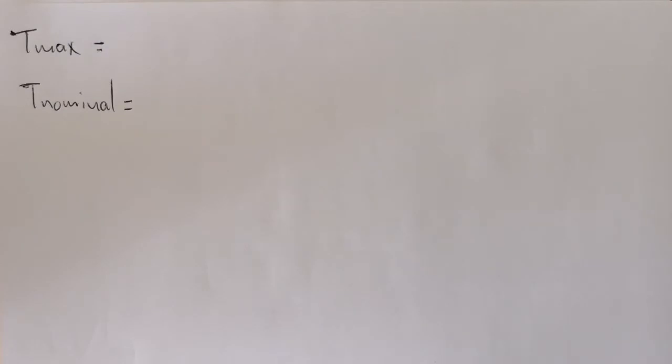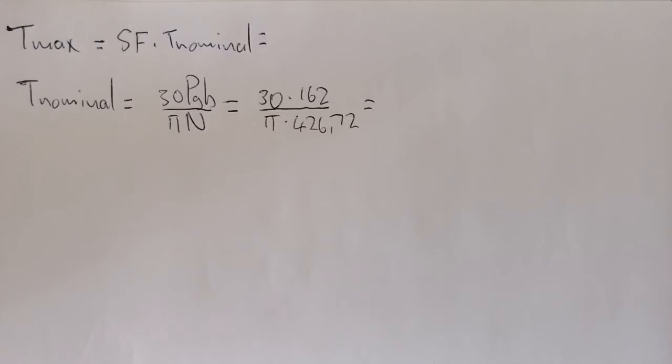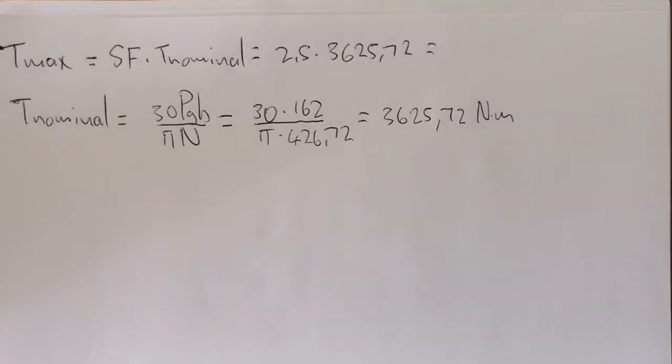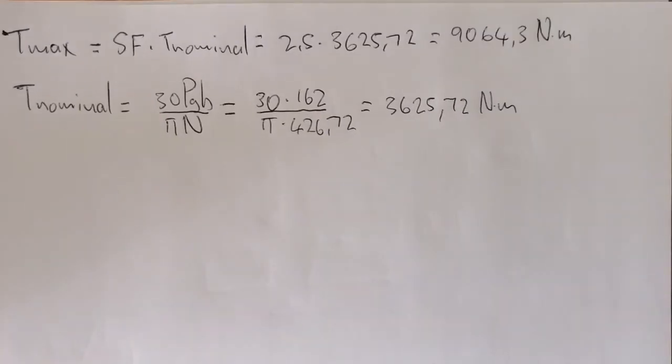Now let's look at the maximum torque and the nominal torque. Maximum torque is service factor times the torque nominal. Nominal torque is 30 times the power of the gearbox over pi times the speed of the gearbox. This equals 3625.72 newton meters with a maximum torque equal to 9064.3 newton meters. The maximum torque is what the coupling can handle if you select it right. The nominal torque is what the coupling actually operates on.